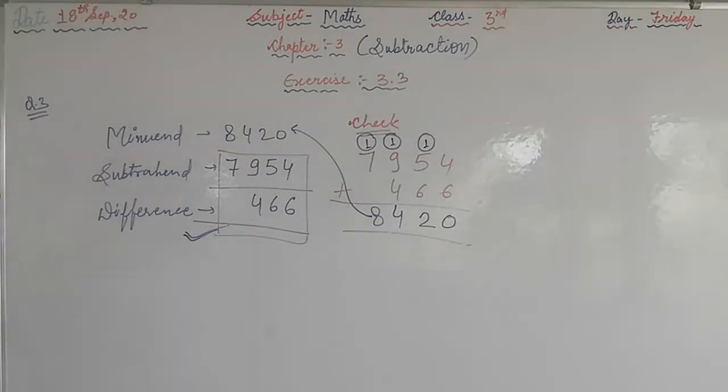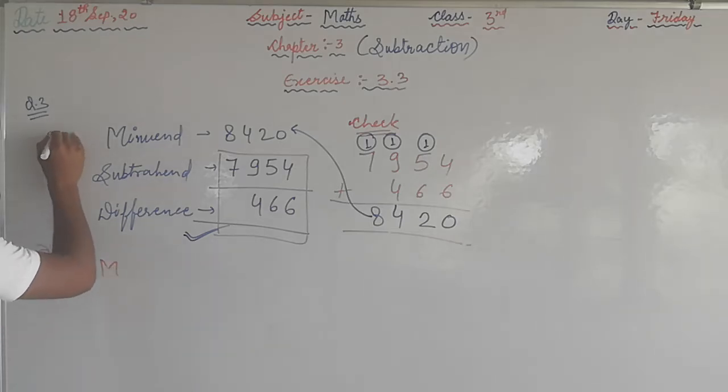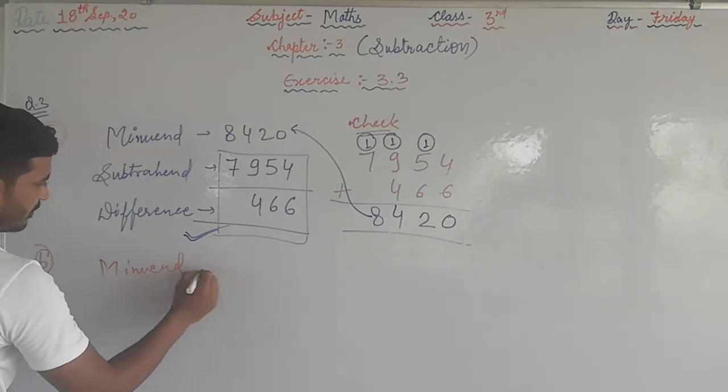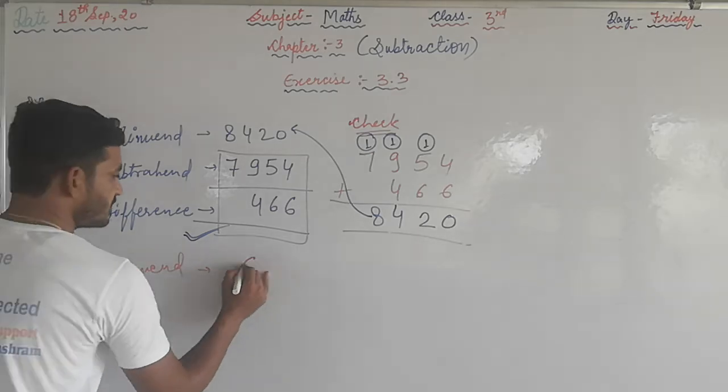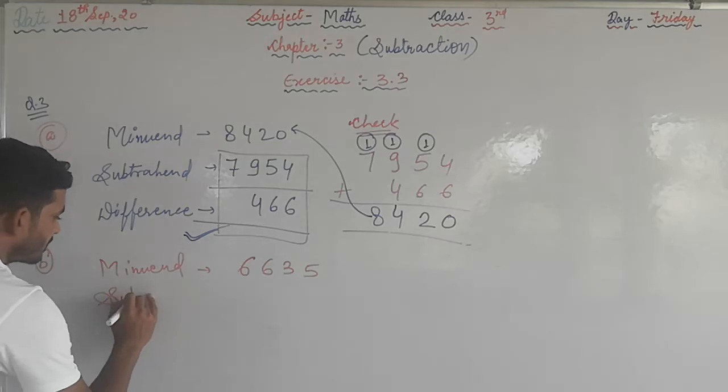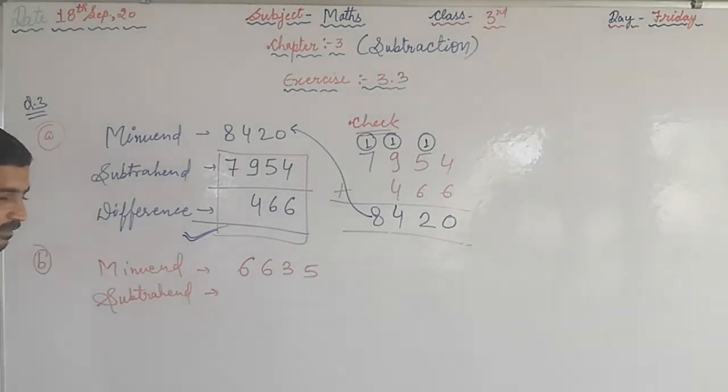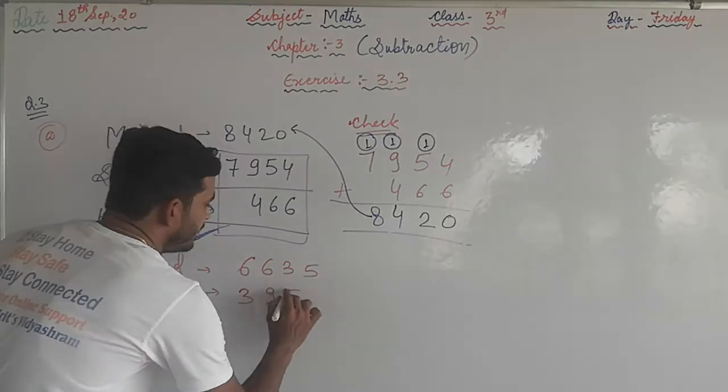See the second one, part B. Here also minuend is given in the question. Here is part A. What is the minuend? Minuend in the question, here it is 6635. And the subtrahend, subtrahend is also given. What is the subtrahend? Here it is 3952.